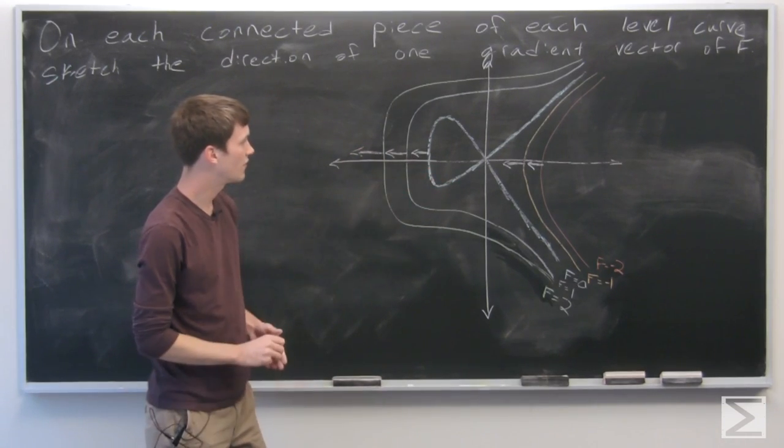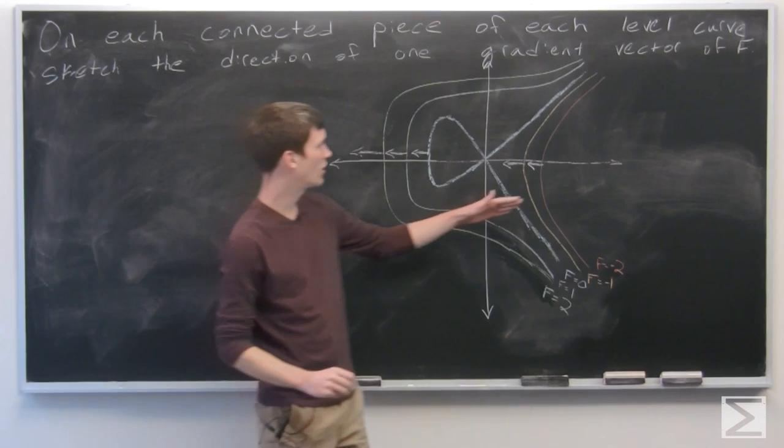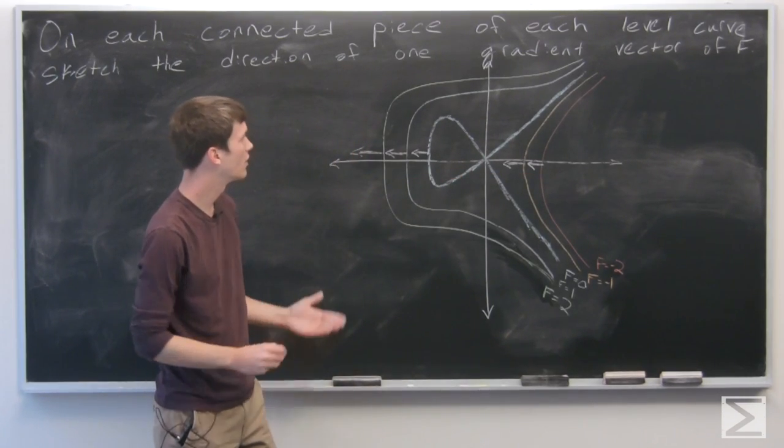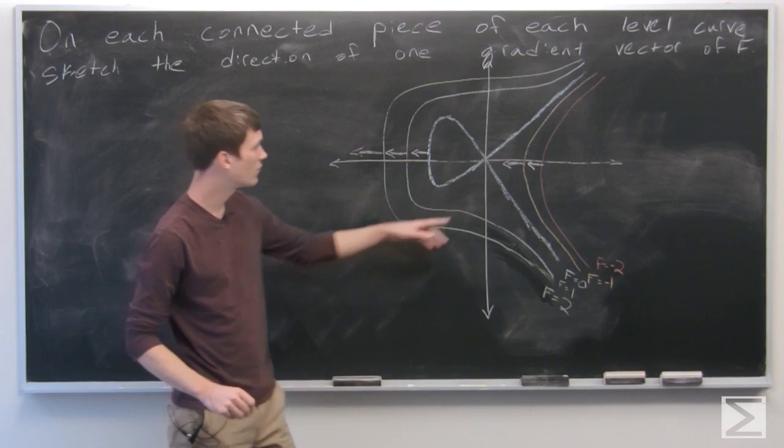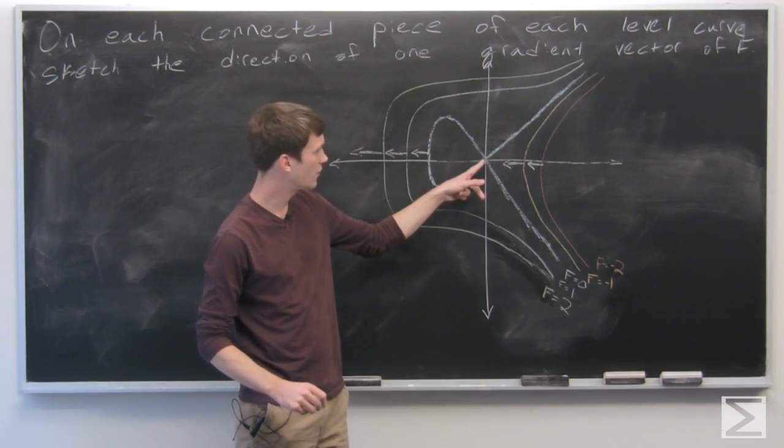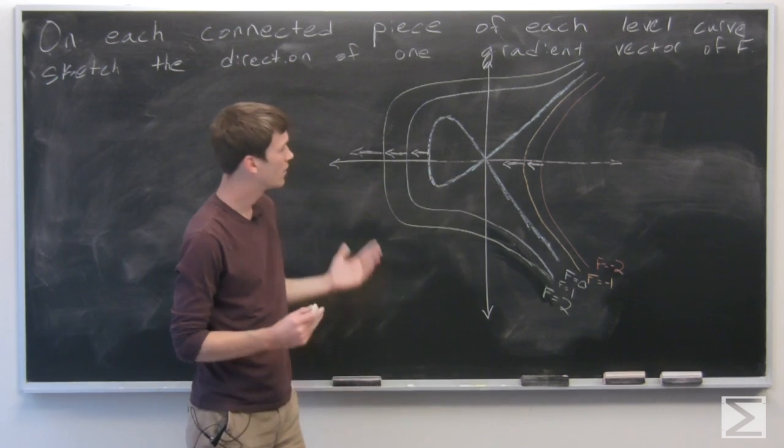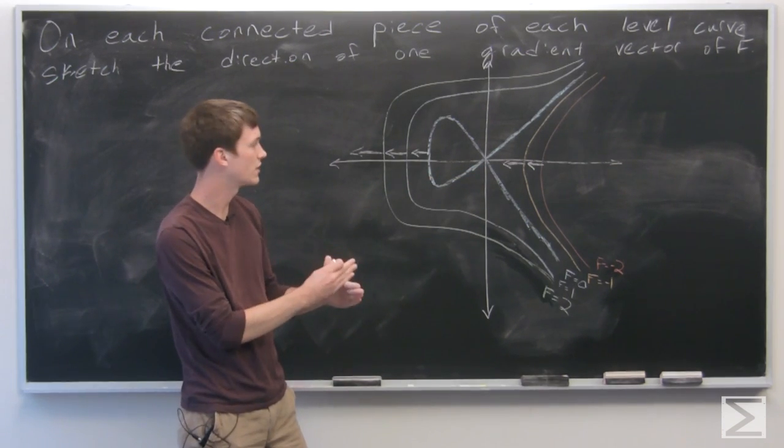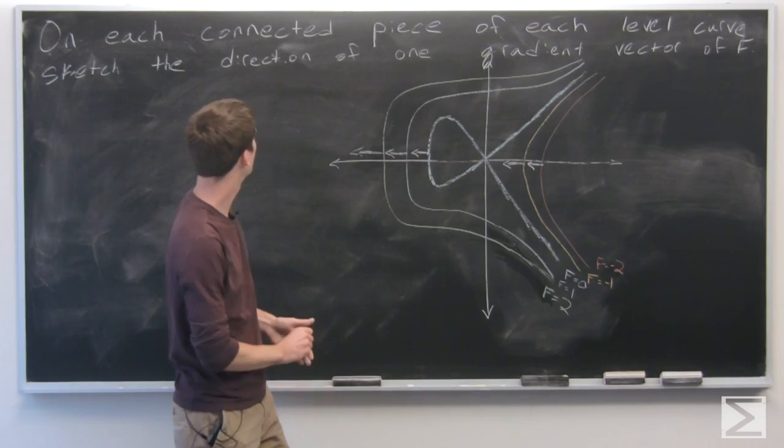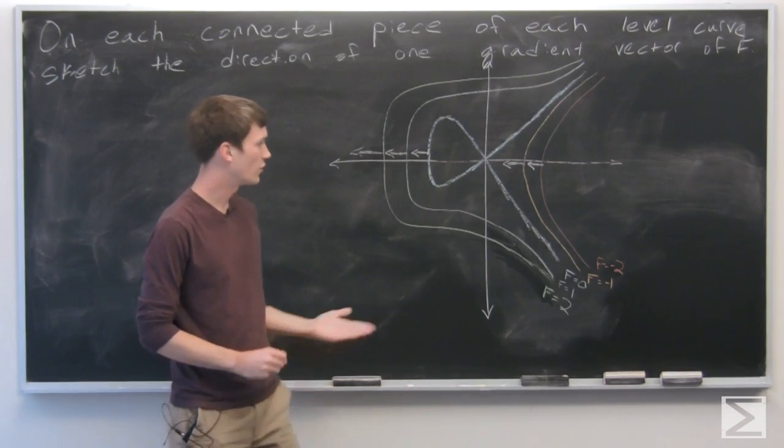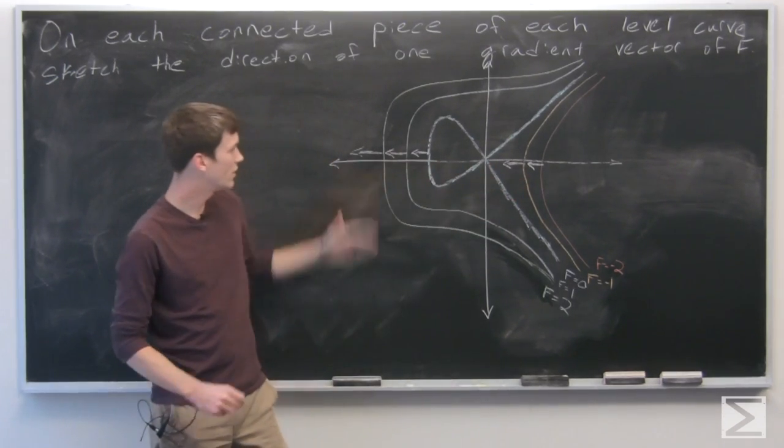So we get this interesting diagram with all of our gradient vectors on each of our level curves, and notice that there's probably a singularity right here at where the origin is on this graph, because the lines are intersecting. But we just wanted to sketch the direction of one gradient vector, and that's what we did here.